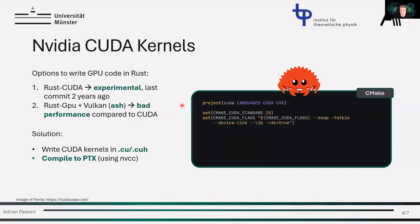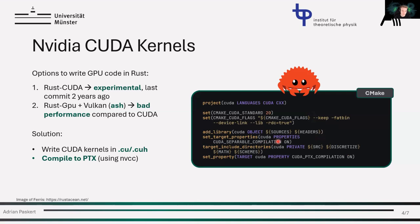So I bit the bullet and wrote the CUDA kernels in CUDA C++ — the C++ dialect for writing CUDA kernels. Instead of compiling to a single execution binary as is normally done with CUDA, I compiled them to PTX. You can use CMake for this; you just have to set a few flags, turn on CUDA separable compilation, and enable CUDA PTX compilation.